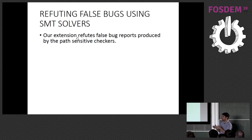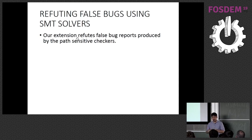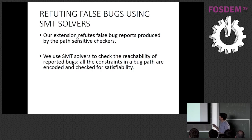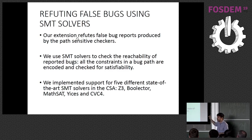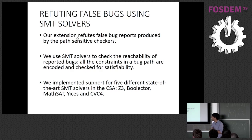We focus on path-sensitive checkers, looking at constraints along a path and checking if they are feasible using SMT solvers. We encode the constraints and check for satisfiability. Currently we support five different solvers: Z3, Boolector, MathSAT, Yices, and CVC4. Only Z3 is in the Clang main repository, since all five produced essentially the same results.